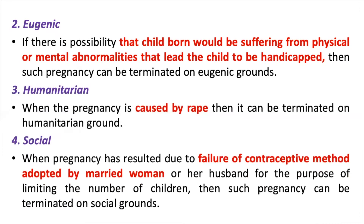Fourth one is Social. When pregnancy has resulted due to failure of a contraceptive method adopted by a married woman or her husband for the purpose of limiting the number of children, then such pregnancy can be terminated on social grounds.